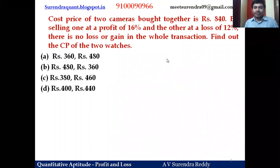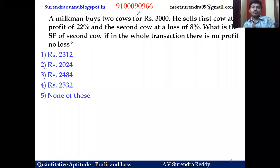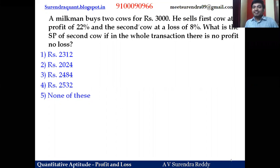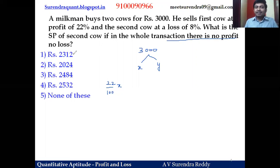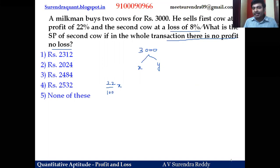Next question: a milkman buys two cows for 3000 rupees. He sells the first cow at a profit of 22 percent and the second cow at a loss of 8 percent. In the whole transaction there is no profit no loss. Find the selling price of the second cow. Let first cow cost be x, second be y. Since no profit no loss, 22 percent of x equals 8 percent of y.